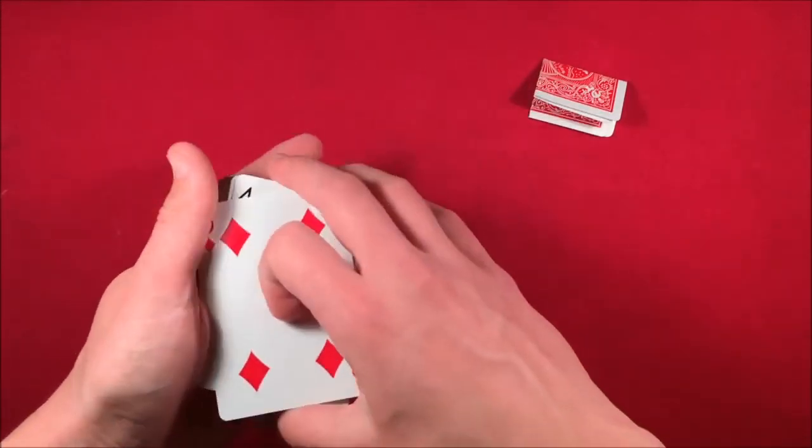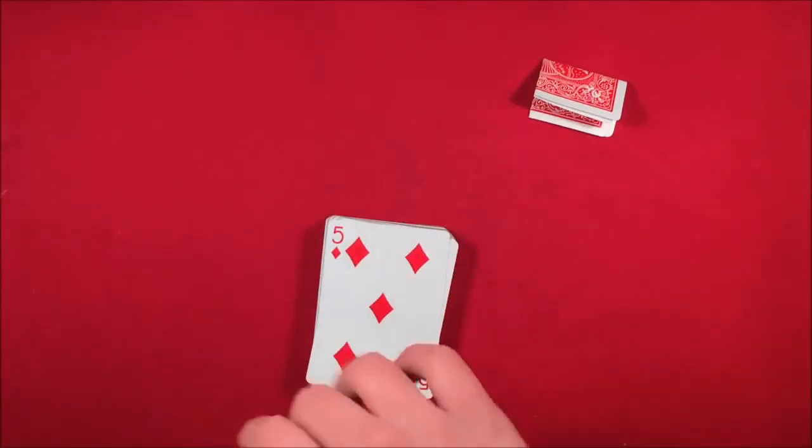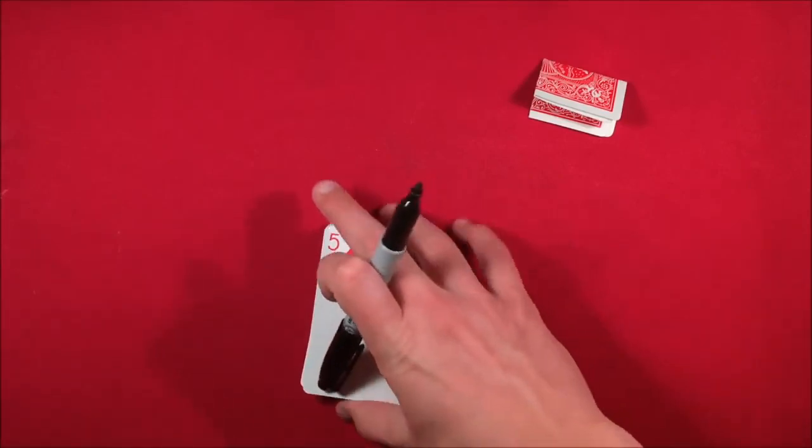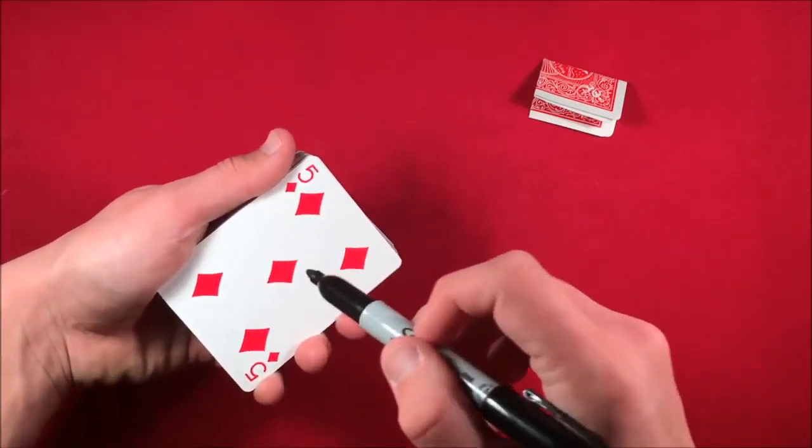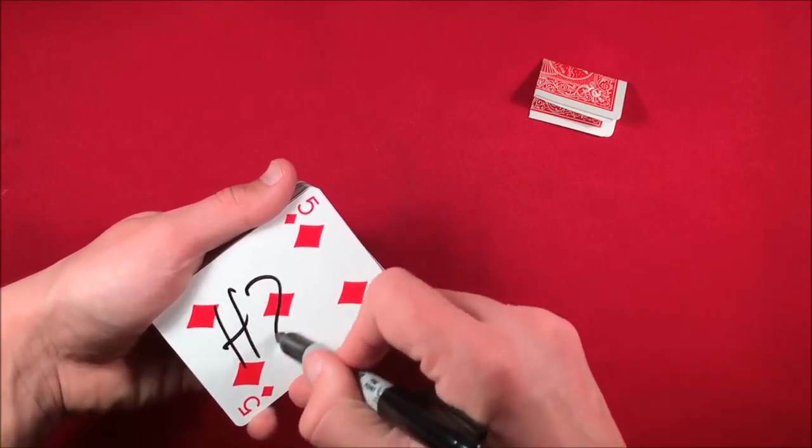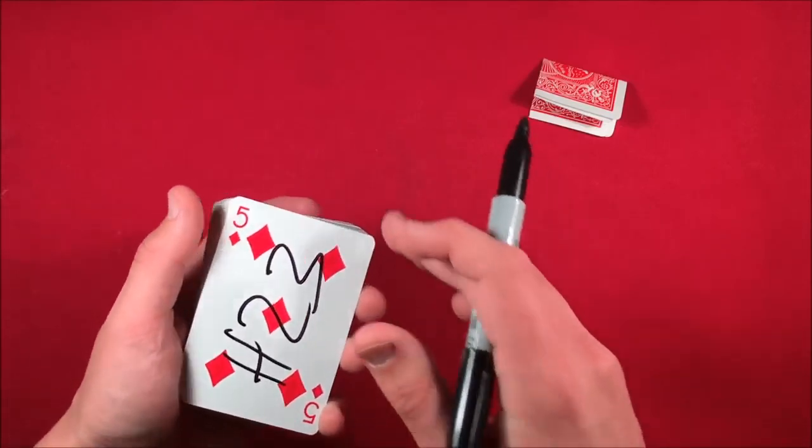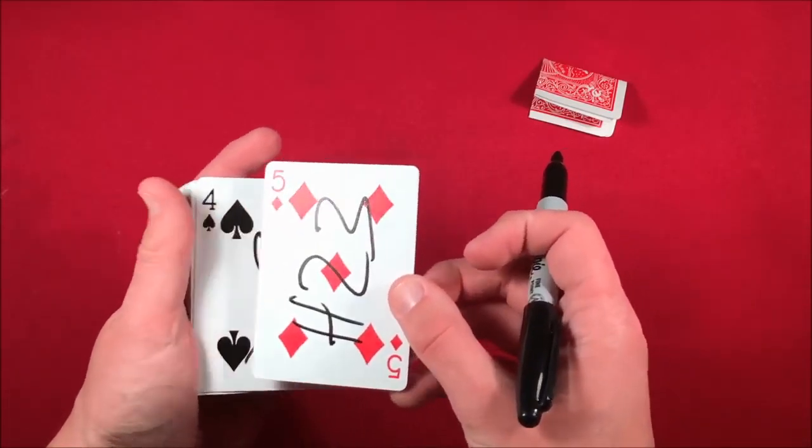From here you tell the spectator, 'Okay, I'm going to go ahead and take the next card, my card.' And what you do is you're doing a double lift because obviously you have the duplicate underneath the top card. I'll leave a link up on the screen for the double lift. You sign their card, or you sign your own card, and you make the signature the exact way that you did before. The spectator isn't going to be paying so much attention to this card.